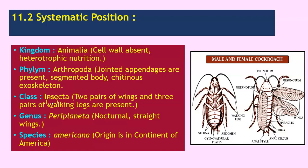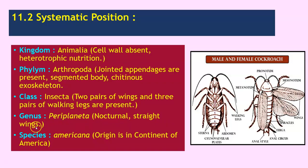Class: Insecta — two pairs of wings and three pairs of walking legs are present. Genus: Periplaneta — they are nocturnal and have straight wings. Species: americana, meaning their origin is in the continent of America. Here is the image of both the male and female cockroach.